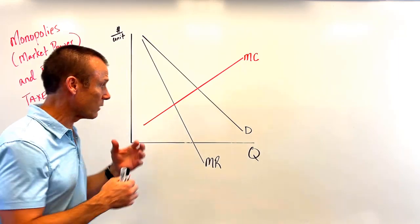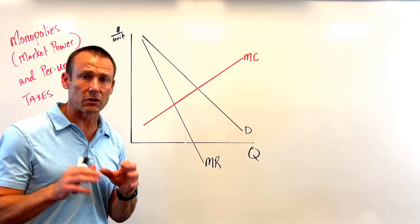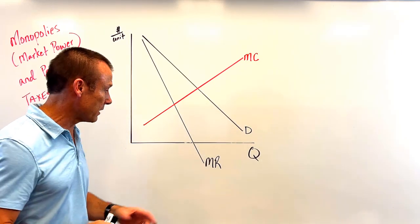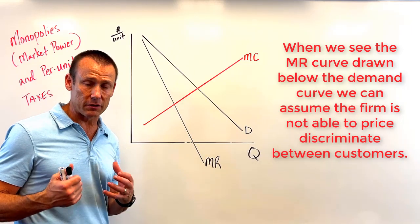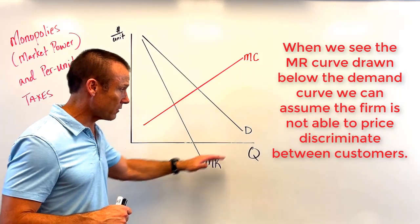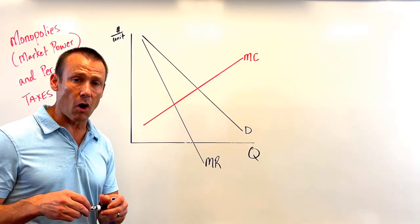Let's first get our graph up to speed for a firm that has market power. I've got a monopoly or monopolistic competition, really doesn't matter. I've got my downward sloping demand curve. I'm assuming no price discrimination, so I've got MR twice the slope of the demand curve.